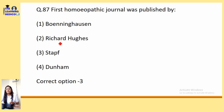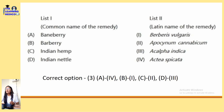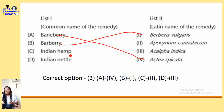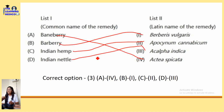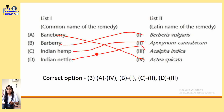The first Homeopathic journal was published by staff — I also couldn't get a reference for this question. Regarding common names and their Latin names: Baneberry is Actaea spicata, Barberry is Berberis vulgaris, Indian hemp is Apocynum cannabinum, and Indian nard is Nardostachys indica. This is from the vegetable kingdom chapter of Crack the Entrance, which is very good. The common and Latin names for baneberry, barberry, Indian hemp, and Indian medicines are given individually and it is easy to remember.